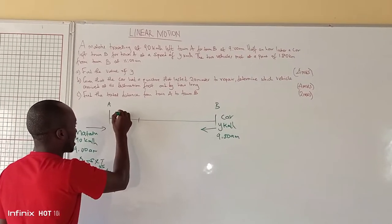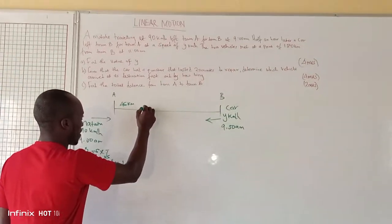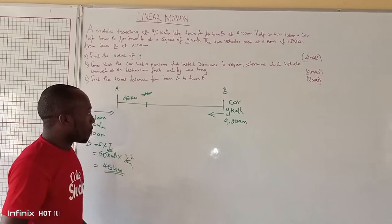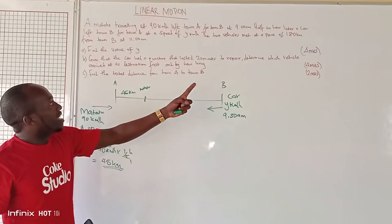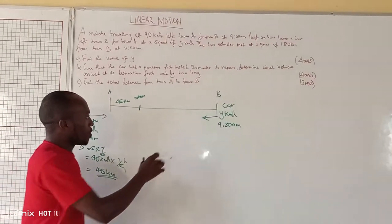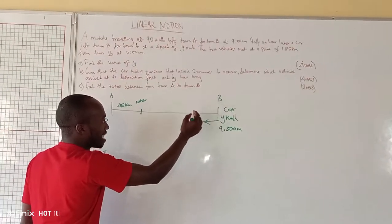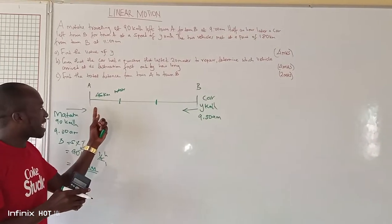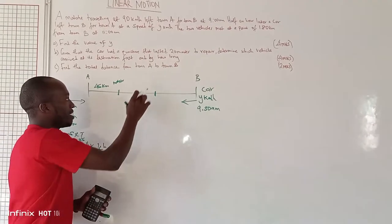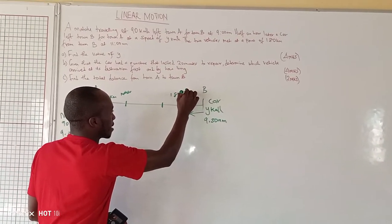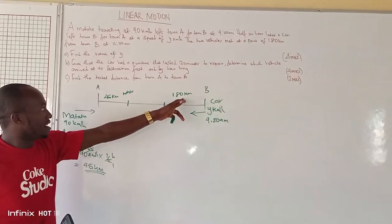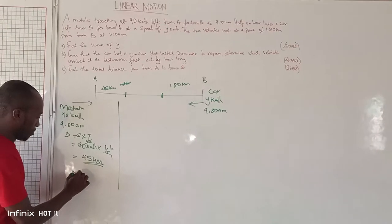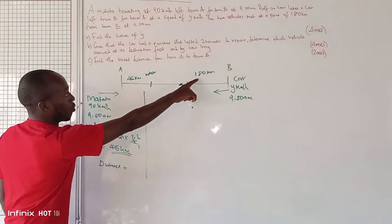At 9:30 am, the matatu had already traveled 45 km. We are told they met at 180 km from town B. So the meeting point is 180 km from town B, and that distance is what we have. The distance the car traveled to the meeting point is 180 km.